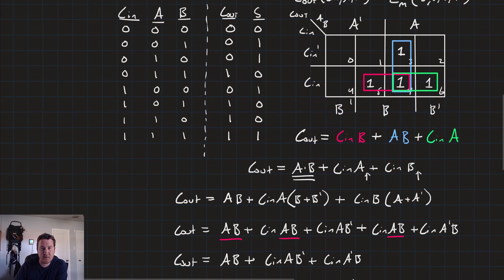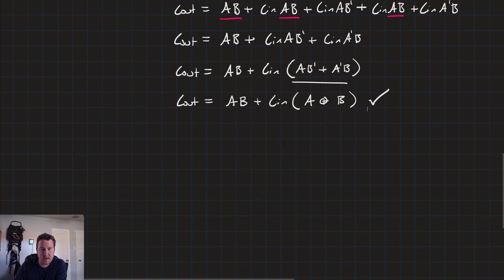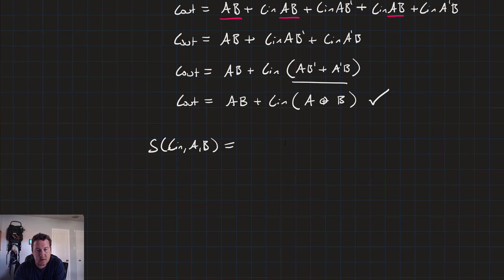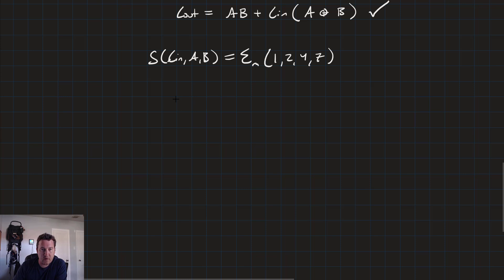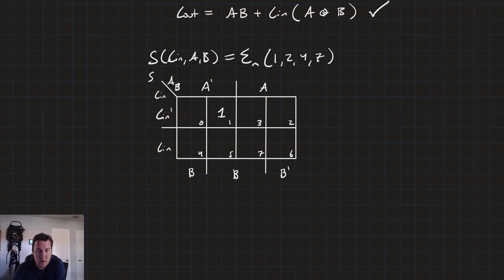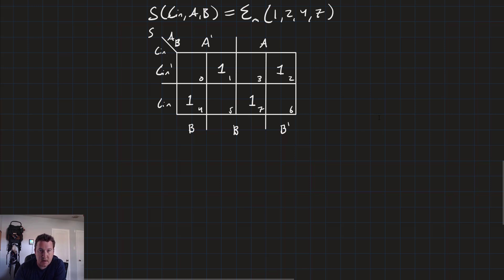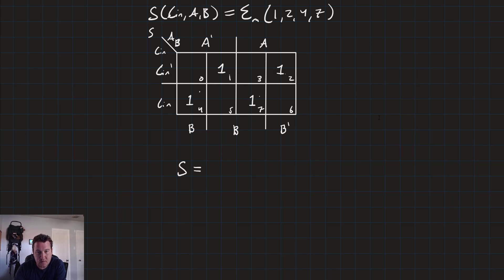Now let's go back and get the sum expression. The sum was at minterms 1, 2, 4, and 7. So sum is a function of C-in, A, and B equal to the sum of minterms 1, 2, 4, and 7. Setting up the three-variable K-map and placing those terms — that looks like trouble, but this is a special diagonal pattern. We can prove it with Boolean algebra, but when you see this diagonal pattern in your three-variable K-map, it shows us that S equals C-in XOR A XOR B.